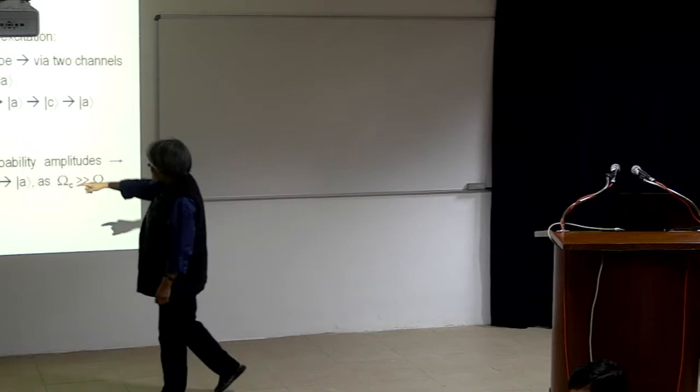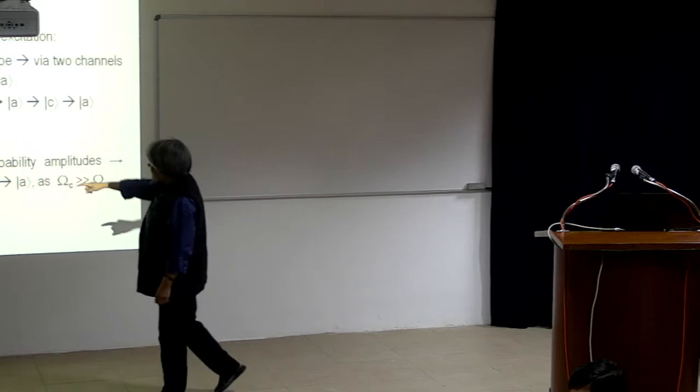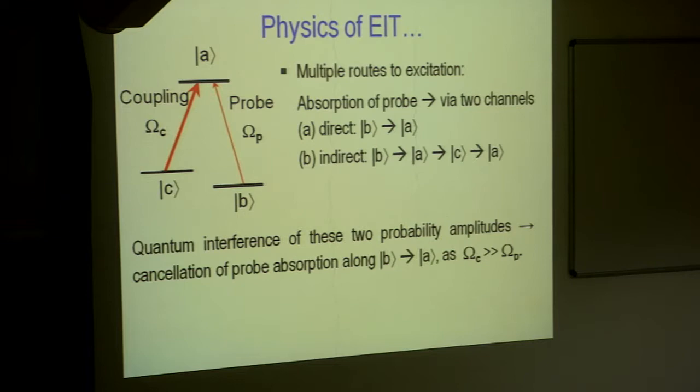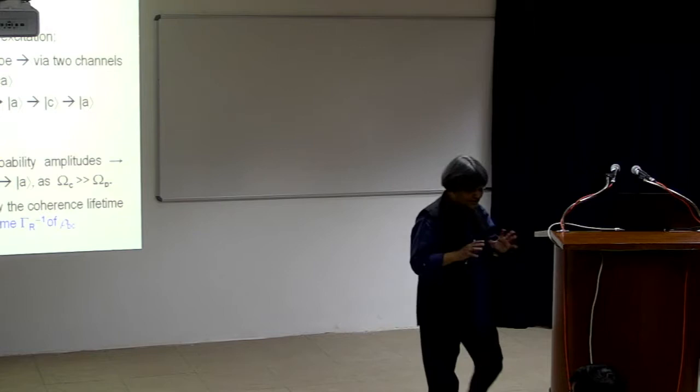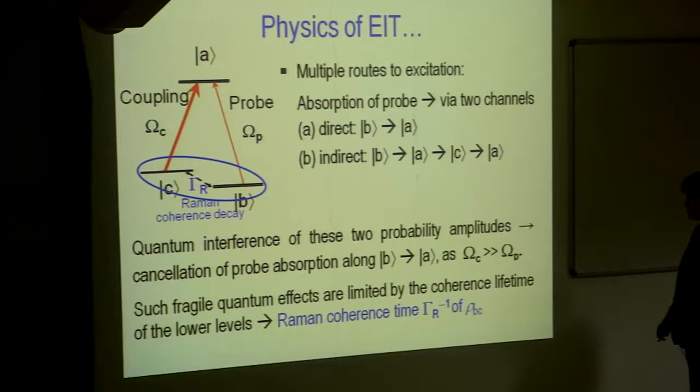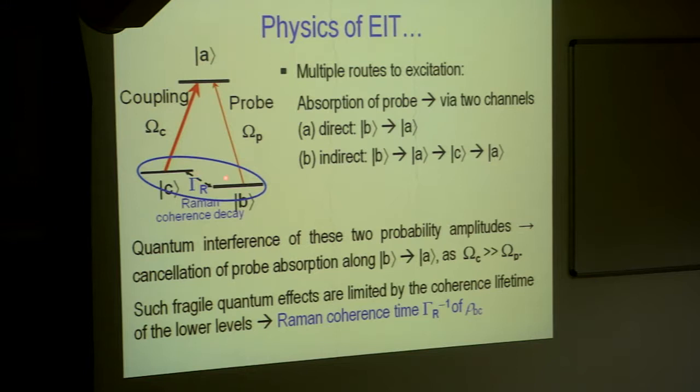A similar thing is happening here, there are two possible ways of lifting population from B to A, one directly, one indirectly through the coupling. These two paths are cancelling each other under certain conditions and that is really the natural physics of EIT. This is really the indirect path and the direct path combining together essentially cancelling the probe absorption along this.